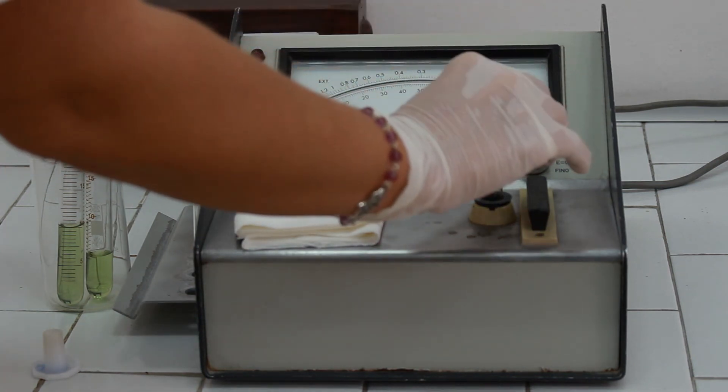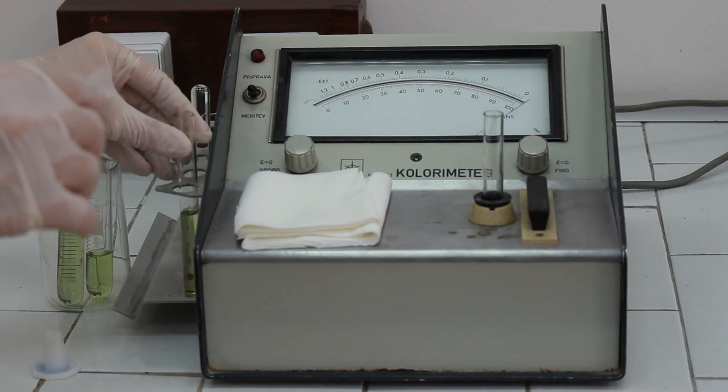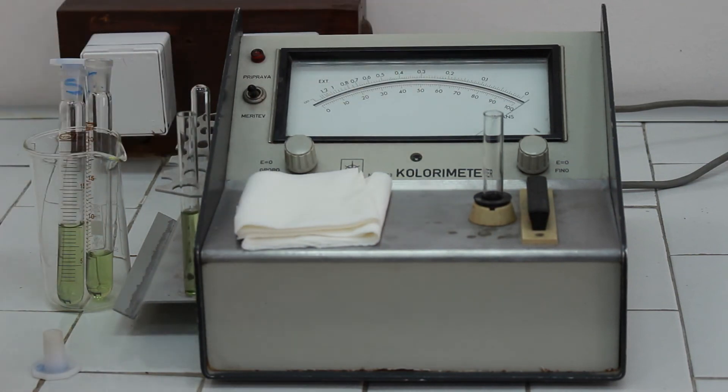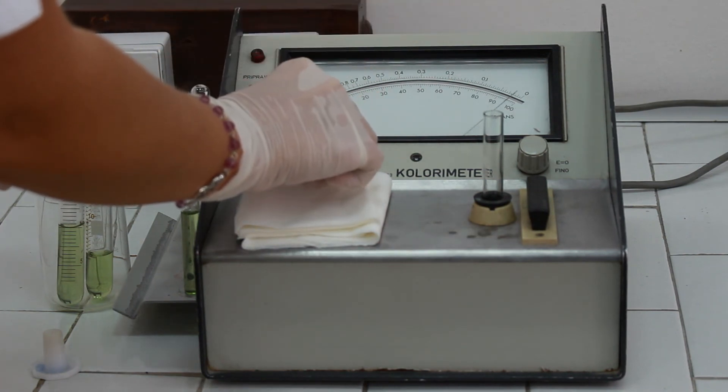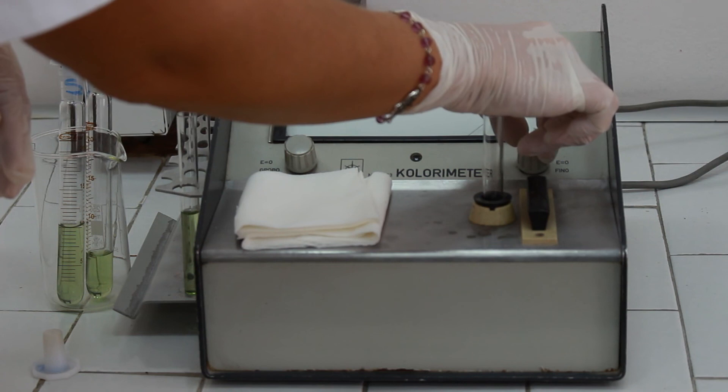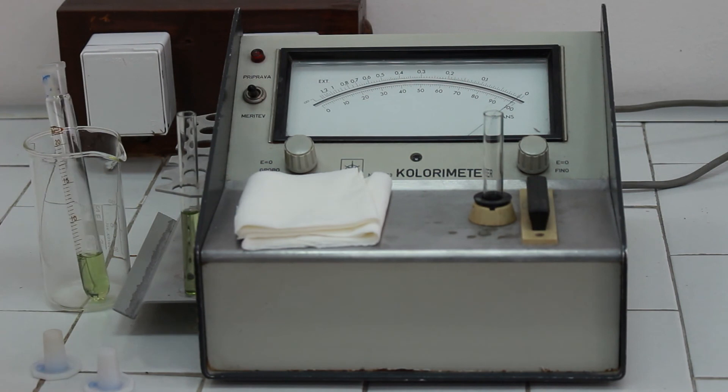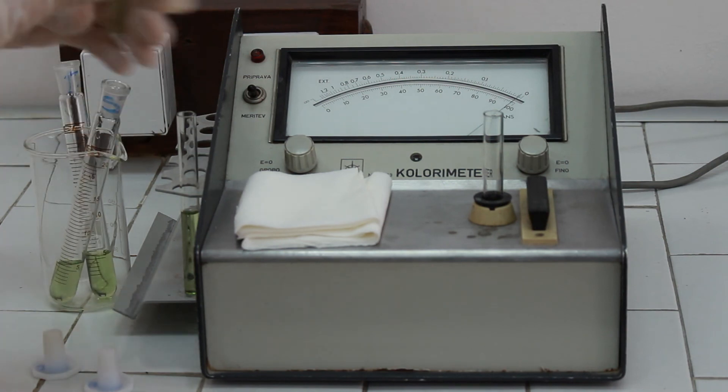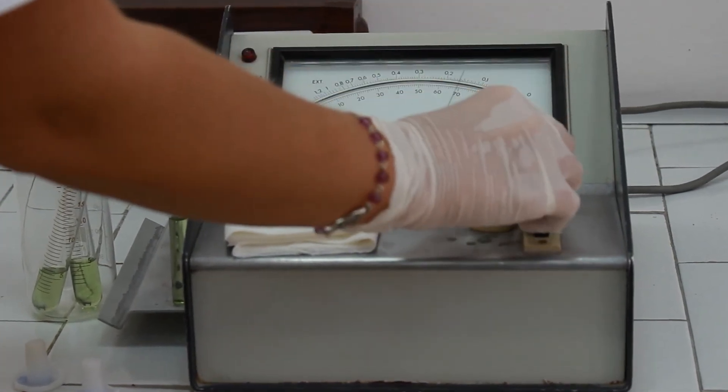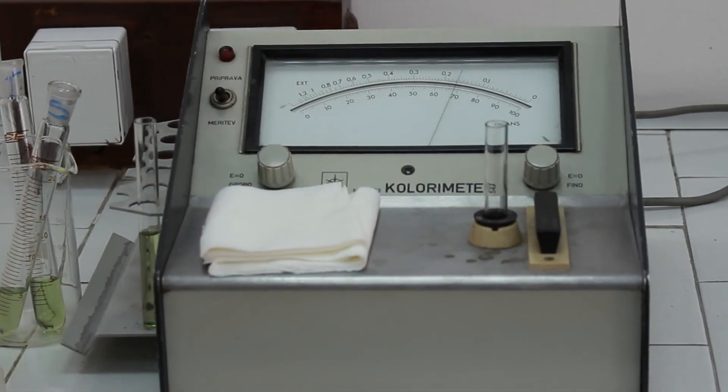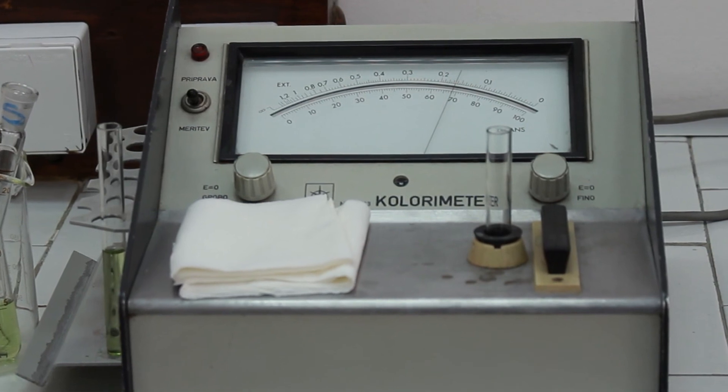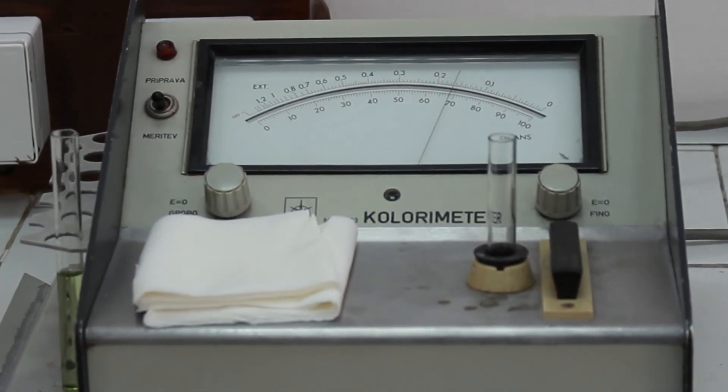We are going to put back the blank solution just in case the zero point is changed. If it's changed, we have to adjust it again. Now we have to pour the standard solution to the cuvette, put it to photometer and read the absorbance at the upper scale. Now we can calculate the results.